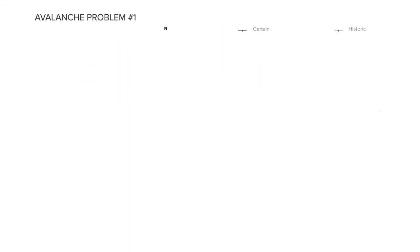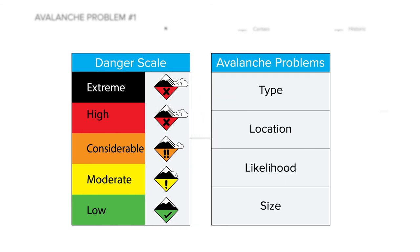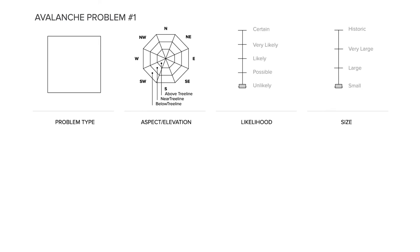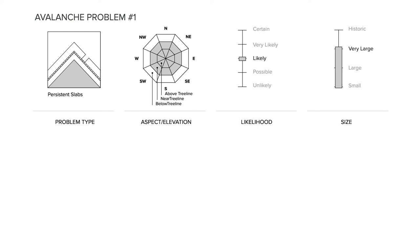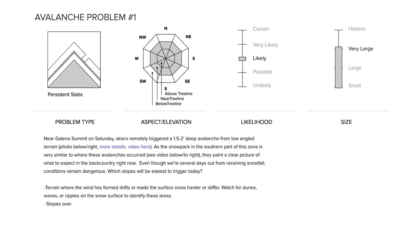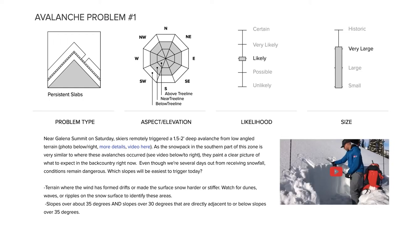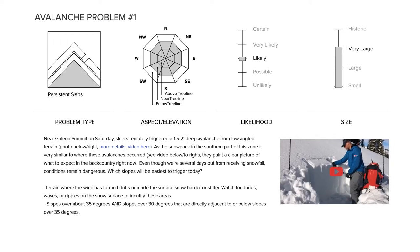Avalanche problems are an extension of the danger rating. Avalanches come in many shapes and sizes. Avalanche problems allow you to better visualize and understand the avalanches you may encounter. This section illustrates the type of avalanche, where that avalanche exists in the terrain, how likely you are to trigger it, and how big it will be. This set of graphics is often accompanied by written descriptions and media that help illustrate or explain it.